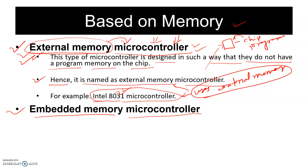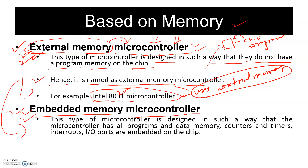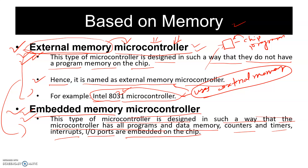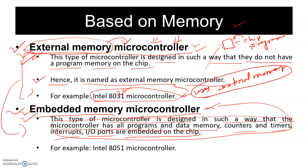On the other hand, the embedded memory based microcontroller is the reverse — the microcontroller has all programs and data memory, counter, timer, interrupts, and input/output ports embedded on the chip. Everything is integrated with the microcontroller. The example for this category is the 8051 microcontroller, which was shown in Part 1 of Week 5.